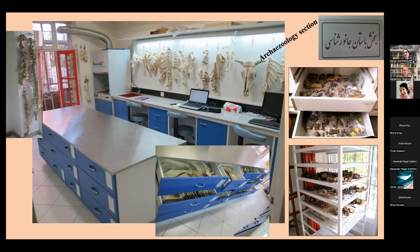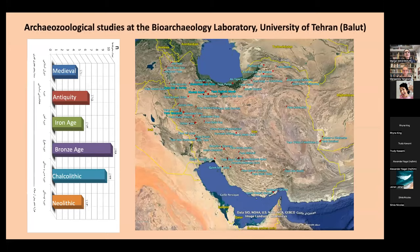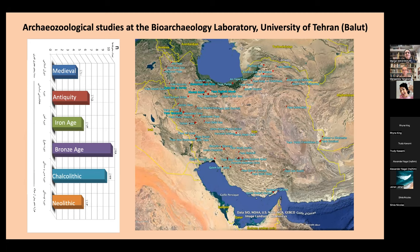This is a recent picture of the lab where we have a representation of major herbivores, both domestic and wild. We can at least work with routine assemblages, and when we have really big problems we cannot solve, we try to export samples to France with authorizations to identify with the collections of the Natural History Museum. Basically these collections have allowed us to study a large set of archaeozoological assemblages.